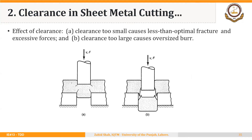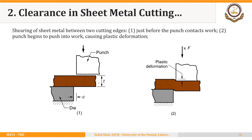Figure B shows an example of excessive clearance — you can see an oversized burr. In figure A, the clearance is too small, so the fractures that start at the punch edge and die edge do not properly meet. Clearance needs to be optimal. This illustrates the shearing of sheet metal between two cutting edges.